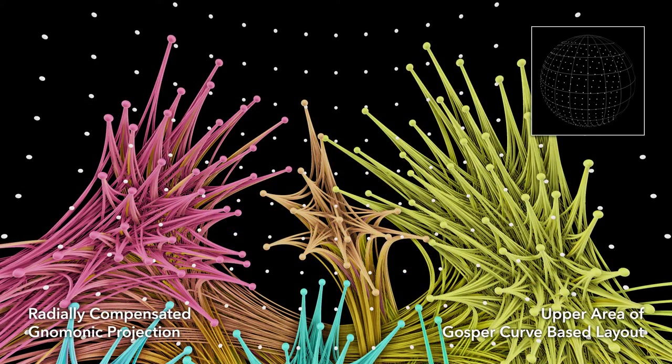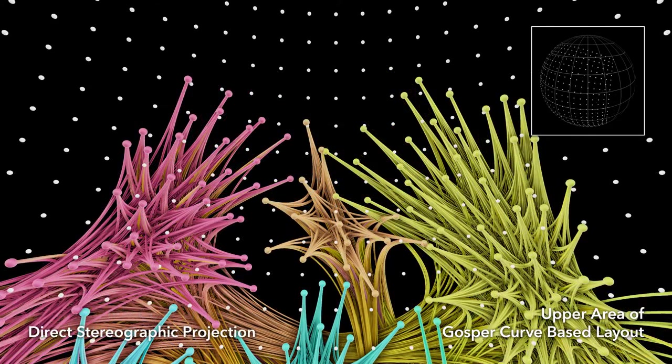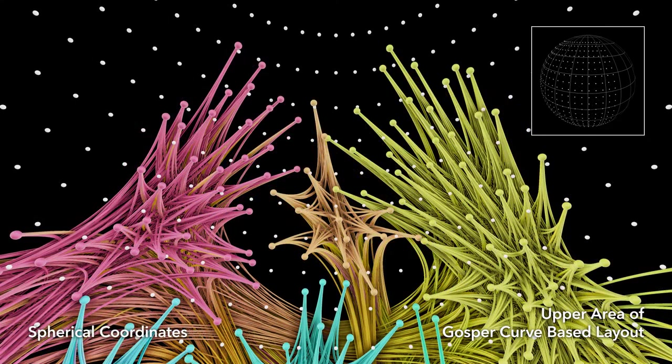Each mapping introduces some distortion as it projects onto the sphere, so we offset this distortion by pre-warping the 2D graph layouts.